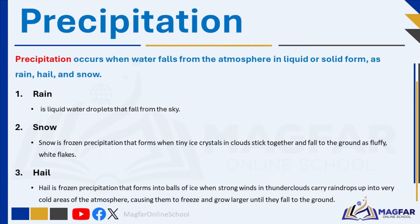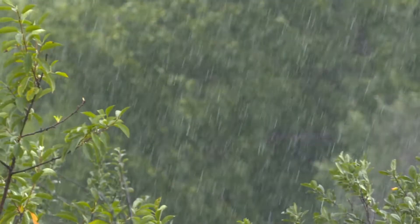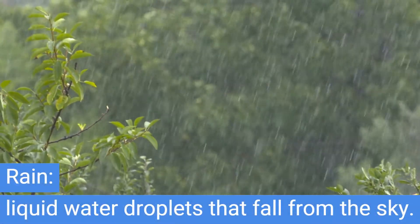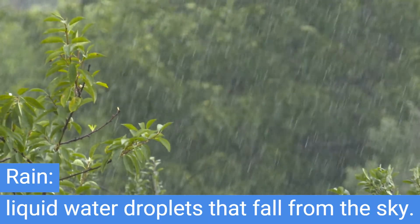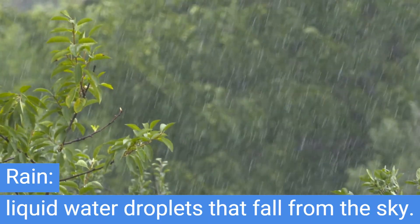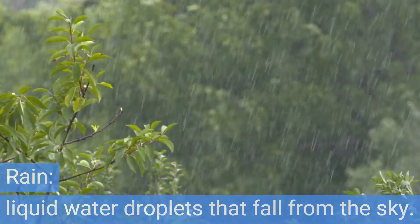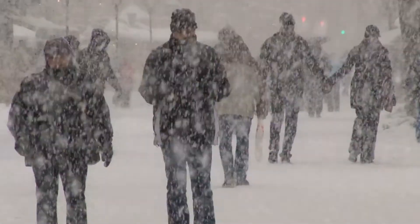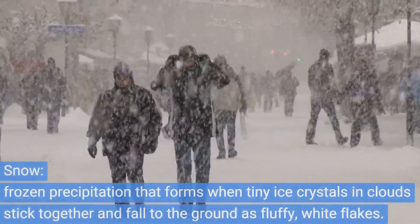Water falls on the earth in different forms known as precipitation. Precipitation occurs when water falls from the atmosphere in either liquid or solid form, including rain, hail, and snow. Rain is liquid water droplets that fall from the sky — it forms when tiny droplets of water in clouds come together until they are too heavy and fall to the ground.